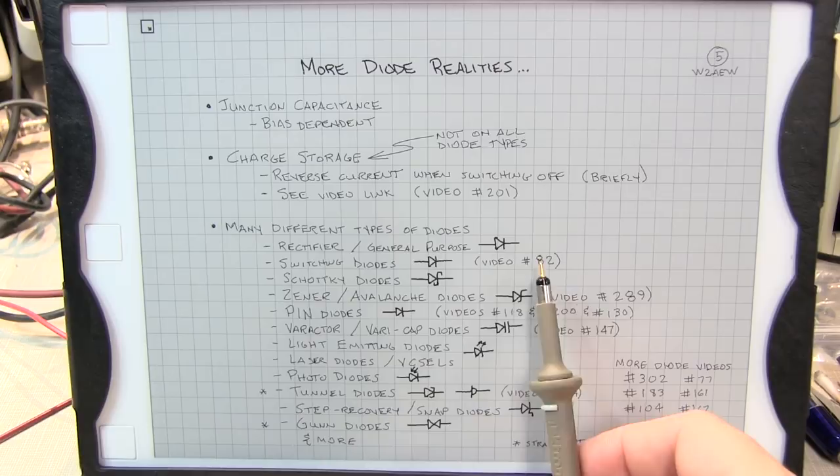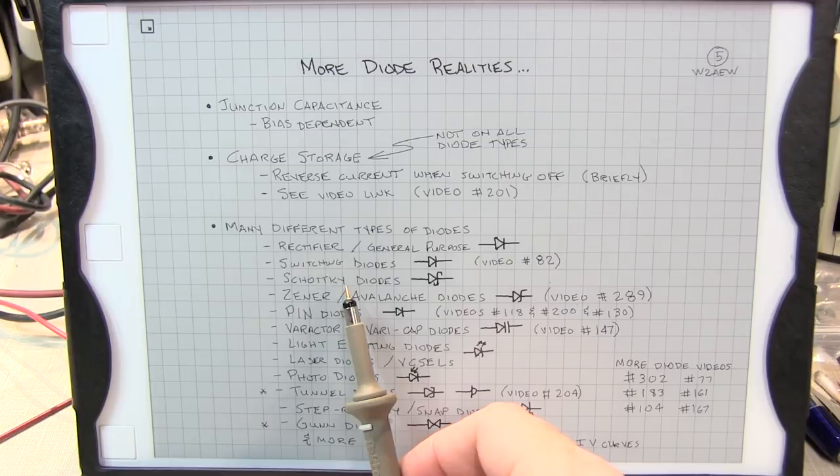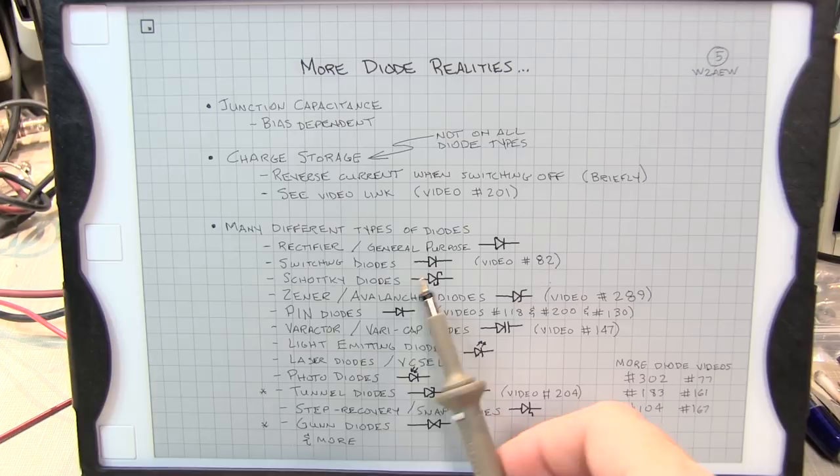Schottky diodes are a little bit different. They're actually not quite a PN junction, also called hot carrier diodes, and they're characterized by having a much lower forward voltage and also have very little charge storage. So they're often used in power applications and switching applications and also in RF applications where you need to switch back and forth very quickly.